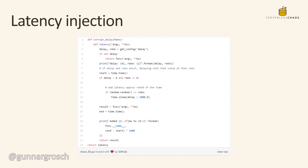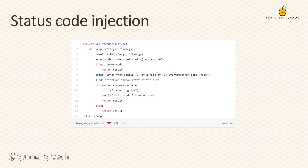Looking at the layer, the latency injection part is more or less the same as before — we can still decorate our functions with the latency injection decorator to add latency. Then we have the new functionality: status code injection, where we can now decorate our functions and add a status code, selecting which error code to inject.